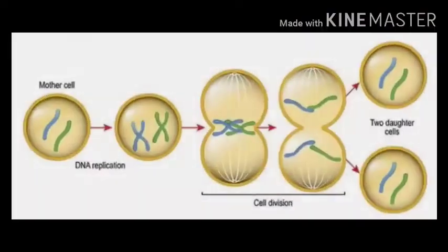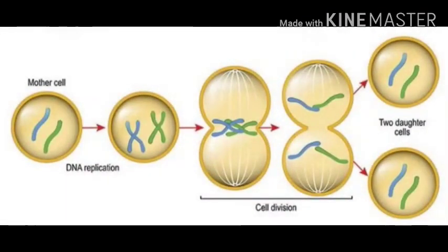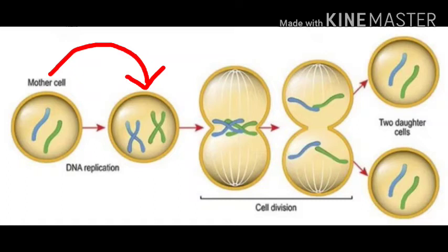Let me explain once again. Suppose there are two chromosomes in a parent cell. During interphase, the genetic material duplicates, so an exact copy of it is formed and pairs. During anaphase, they get separated and move towards opposite poles.